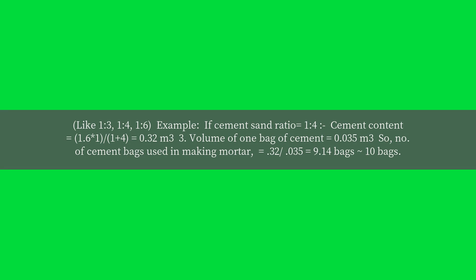With a cement-sand ratio of 1:4, cement content equals 1.6 × (1 / (1 + 4)) = 0.32 cubic meters. Since the volume of one bag of cement equals 0.035 cubic meters, the number of cement bags required equals 0.32 divided by 0.035, which equals approximately 9.14, so 10 bags.